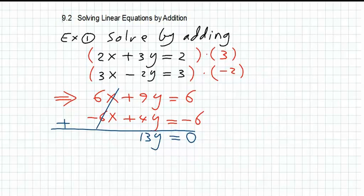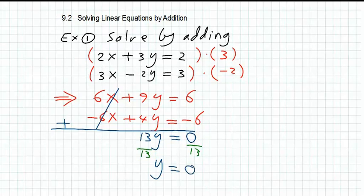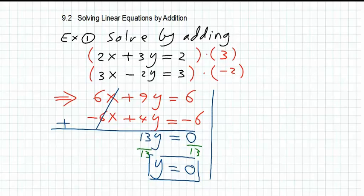You just divide both sides by 13, so you will have that y is equal to zero. This is the value of y. Now we need to find the value of x. Use the value of y to find x by substitution in one of the two original equations.